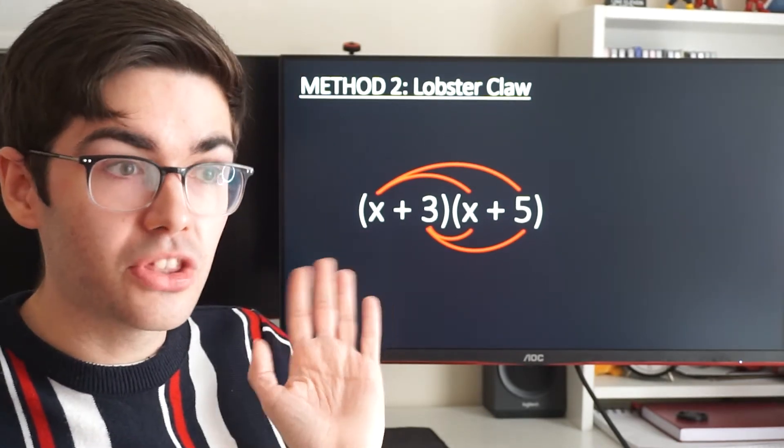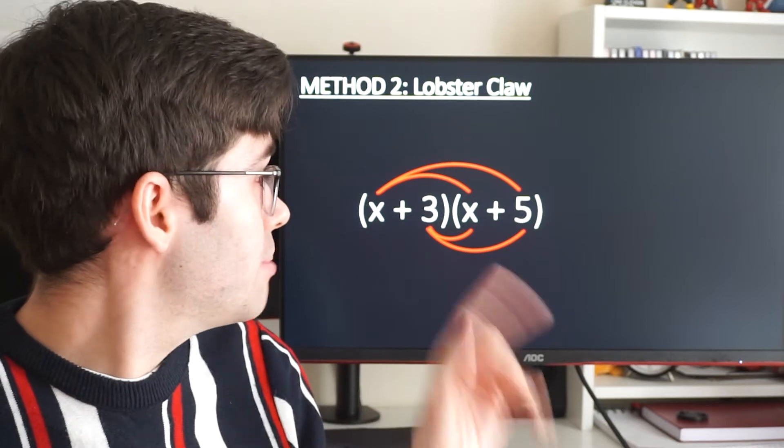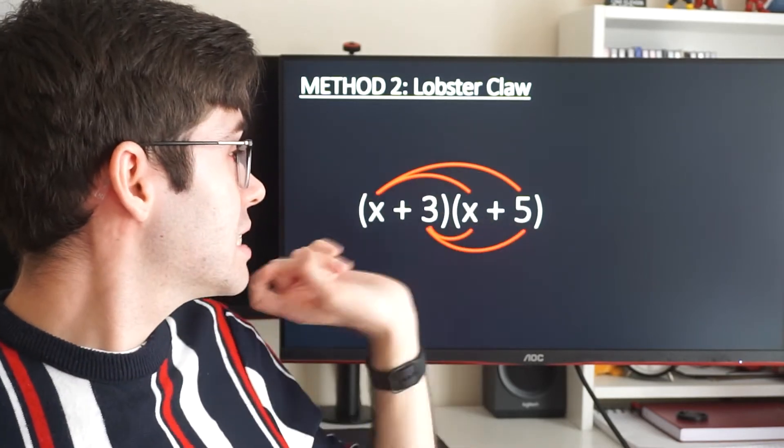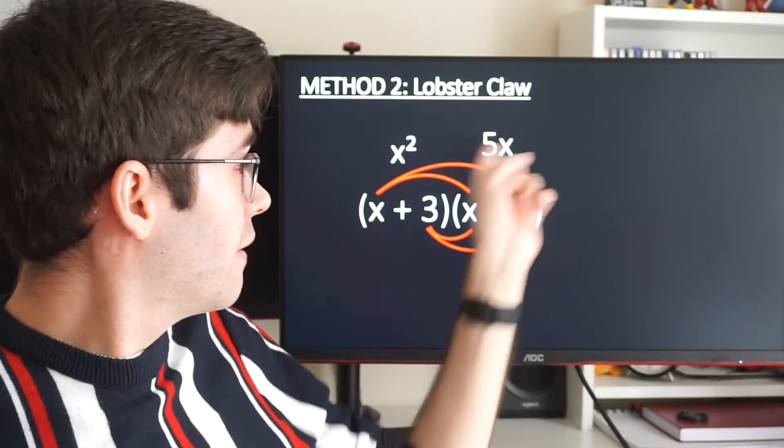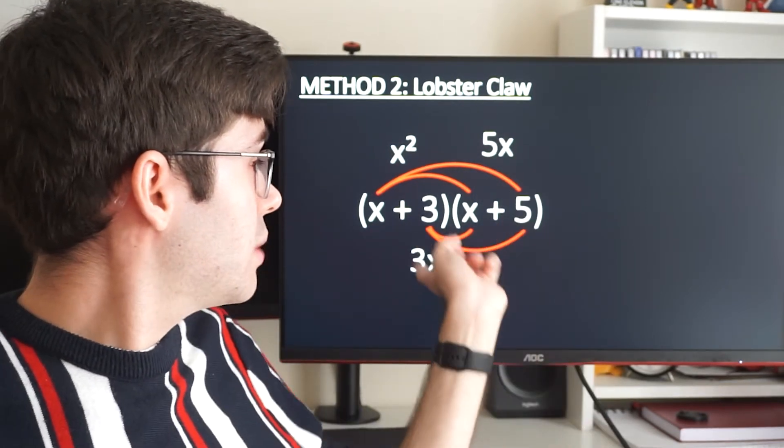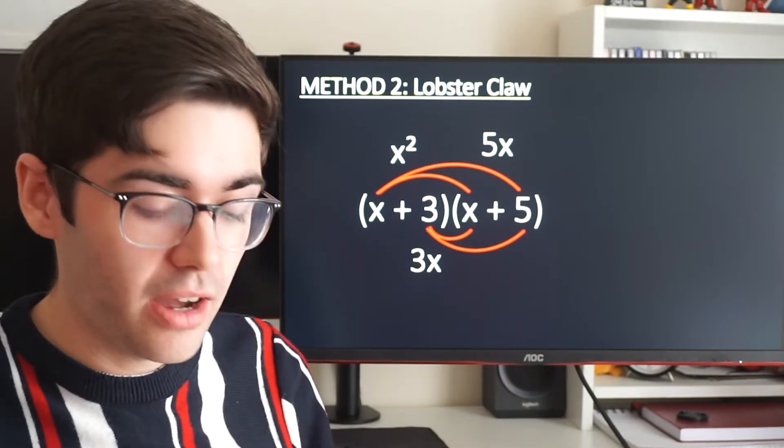And then, similar to how we did with the single bracket multiplication, we're just going to times everything that's connected by a line together. x times x gives me x squared. x times 5 gives me 5x. x times 3 gives me 3x. And 3 times 5 gives me 15.